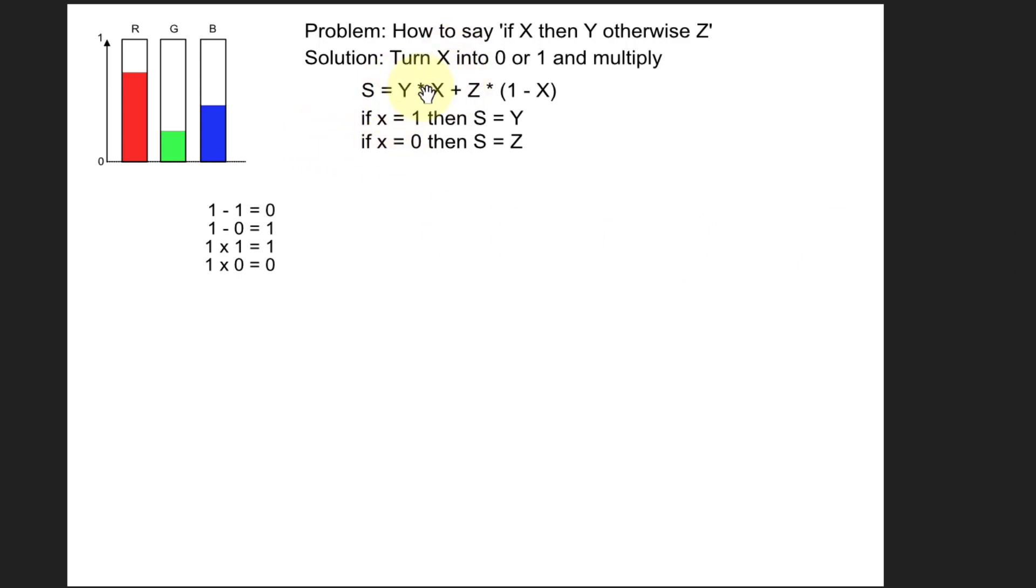And then the other way around, if X is 0, you get Y times X that disappears, and 1 minus 0 is 1, so you get the Z. And this principle can be used wherever you want to say do this, otherwise do that.